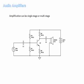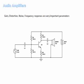This amplification can be single stage or multistage depending on the amount of gain required. Some of the important parameters of audio amplifiers are the gain, the distortion introduced to signals, the amount of noise introduced, and ultimately the frequency response of these audio amplifiers. These are very important parameters to consider while designing an audio amplifier.